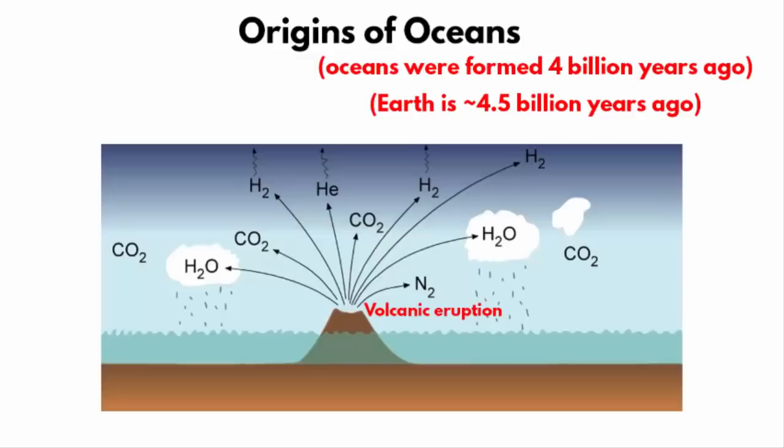When volcanic eruptions took place, one of the gases that came out of the Earth's core was steam, which is also known as water vapor. And when the planet slowly cooled, the steam or water vapor turned into clouds.